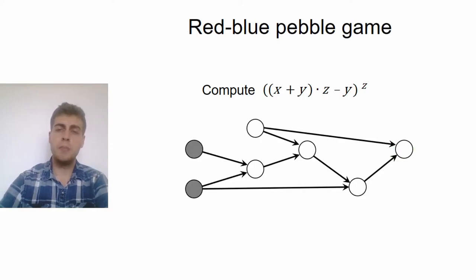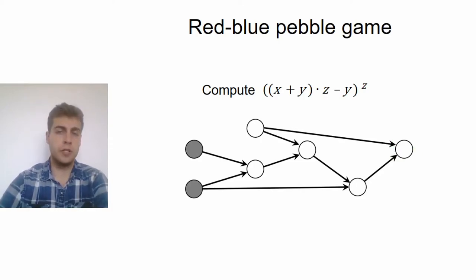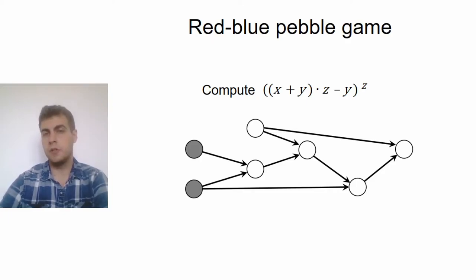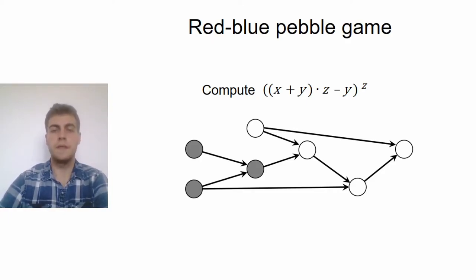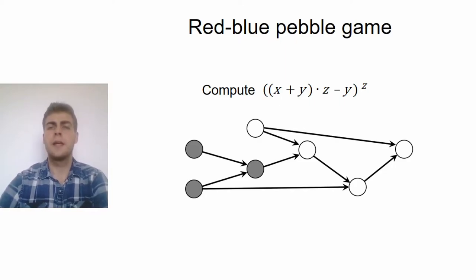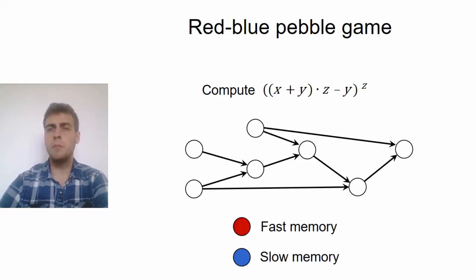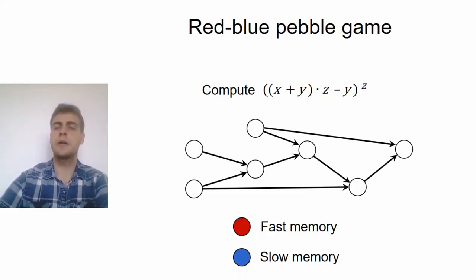And the approach of Pebble Games is to use so-called pebbles to mark values which have already been computed, and then given these two values, you can compute the next value, that is, also place a pebble on that node. And in particular, Red Blue Pebble Games model this computation in a two-level memory hierarchy.